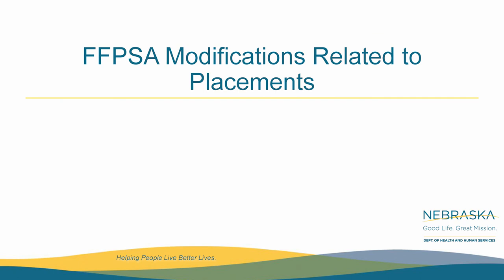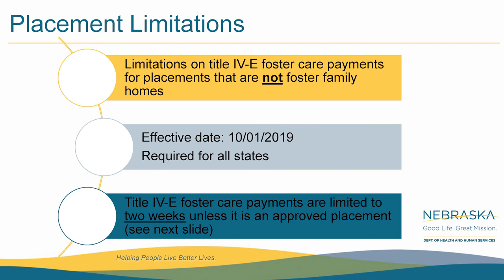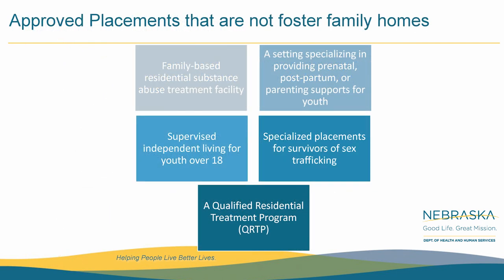Now we're going to speak about the other modifications related to placement within FFPSA. There are placement limitations — specifically, limitations on Title IV-E foster care payments for placements that are not foster family homes. This went into effect October 1st for all states, and Title IV-E foster care payments are limited to two weeks unless it is an approved placement. Approved placements that are not family homes include family-based residential substance abuse treatment facilities, settings specializing in prenatal, postpartum, or parenting supports for youth, supervised independent living for youth over the age of 18, specialized placements for survivors of sex trafficking, and a Qualified Residential Treatment Program, also known as QRTP.